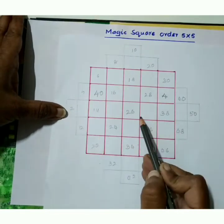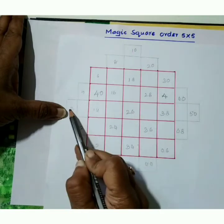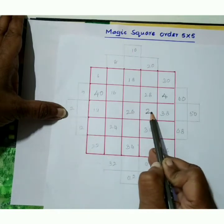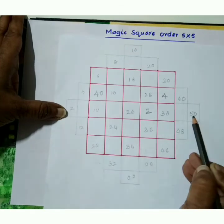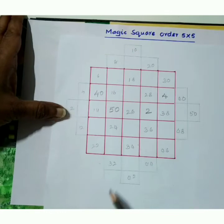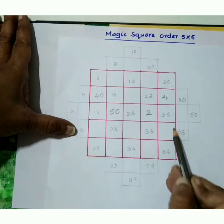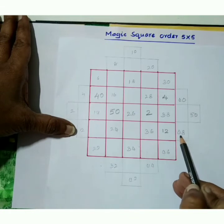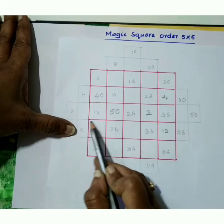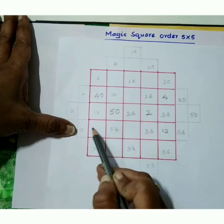Second one. Here row end empty box is this one. So shift 2 to here. And right to left, row end empty box is this one. Shift 50 to here. And 12, row end empty box is this one. Shift 12 to here. And right to left, row end empty box is this one. Shift 42 to here.